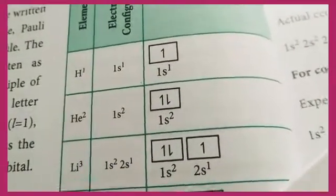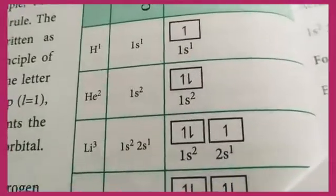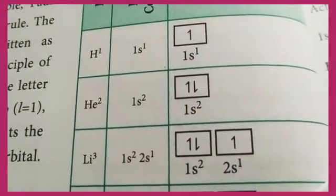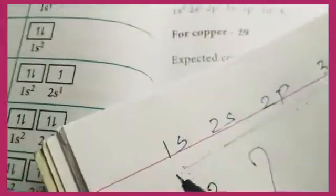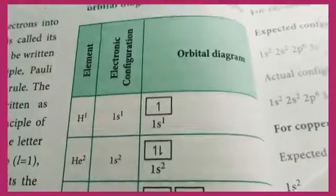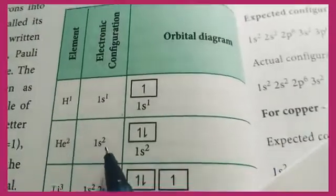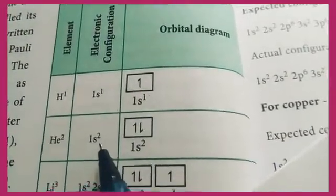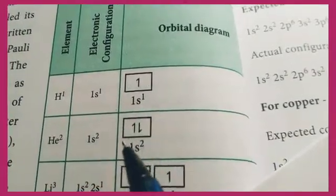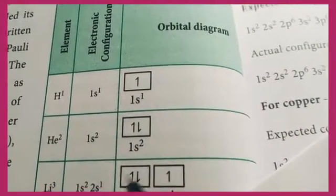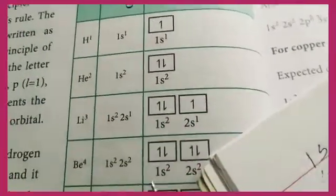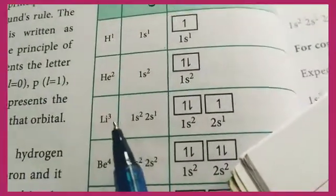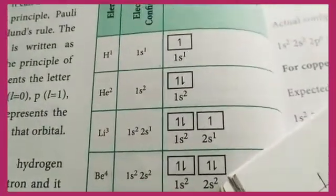Next is helium. The atomic number of helium is 2, so we will have 2 electrons. Both electrons fill the 1s orbital, giving the configuration 1s². The 1s orbital is now completely full with 2 electrons.